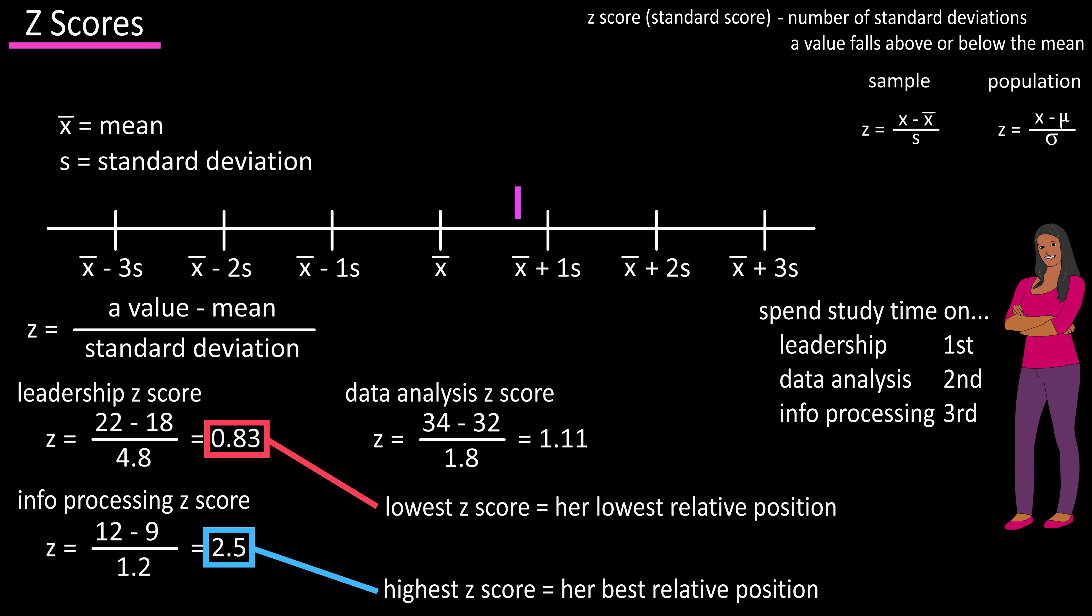Now we can estimate and draw a line at x-bar plus 0.83, which is her z-score in leadership. Draw another line at x-bar plus 1.11, her z-score in data analysis, and another line at 2.5, her z-score in info processing.